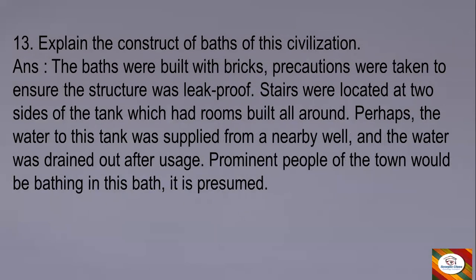Thirteenth question: Explain the construction of baths of the civilization. Answer: The baths were built with bricks. Precautions were taken to ensure the structure was leak-proof. Stairs were located at two sides of the tank which had rooms built all around. Perhaps the water to this tank was supplied from a nearby well and the water was drained out after usage. Prominent people of the town would be bathing in this bath, it is presumed.